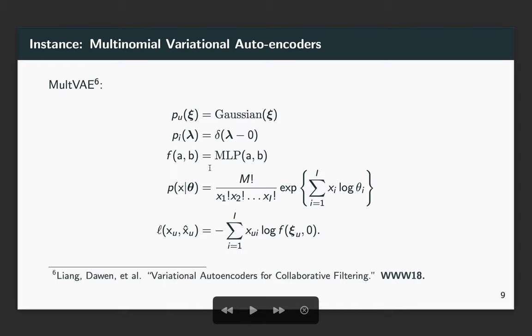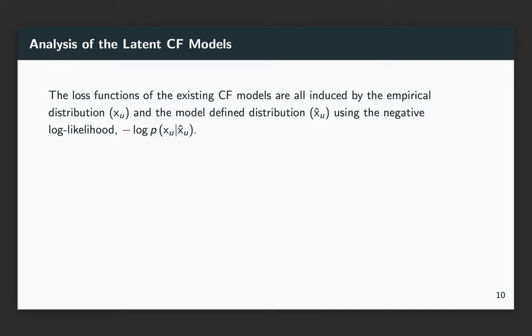Multi-VAE uses MLP for f and multinomial distribution for the observation sampling distribution. It is not hard to see that the loss functions used by these models are induced by the empirical distribution x_u and the model-defined distribution x_u-hat through the negative log-likelihood.